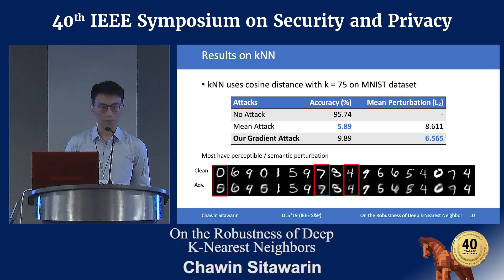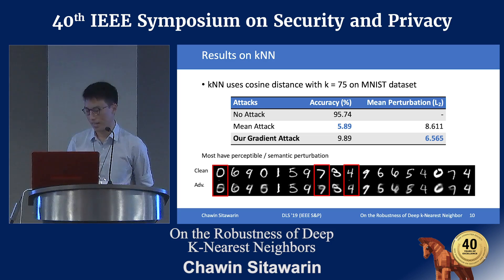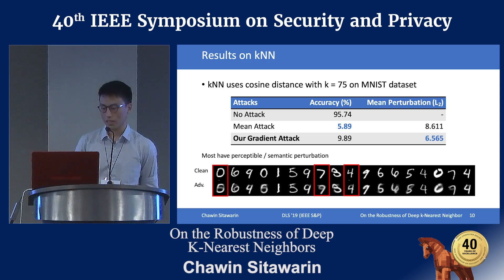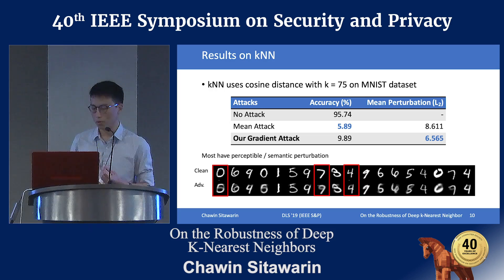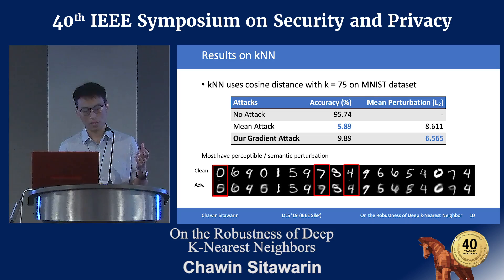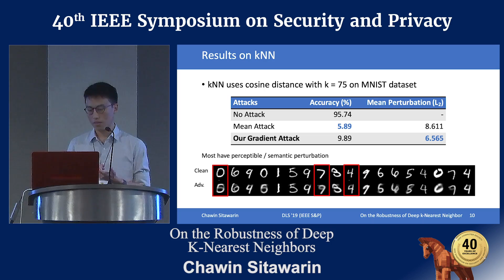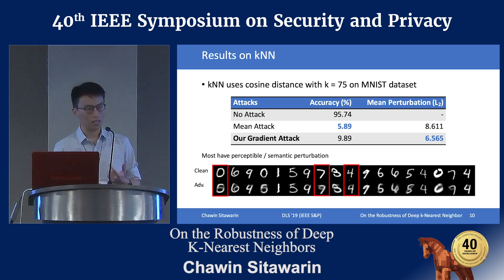Below we also show some samples from the adversarial examples generated by our gradient attack. As you can see, a lot of the perturbations actually have semantic meanings. For example, the samples in the red boxes — the first one's clean image is a zero, but the noise is trying to make this digit look like an eight. Or the seventh sample, where the noise is trying to draw a circle so that it kind of looks like a nine.